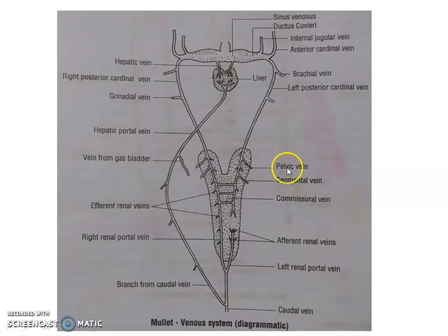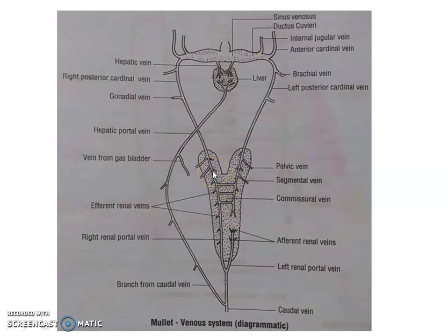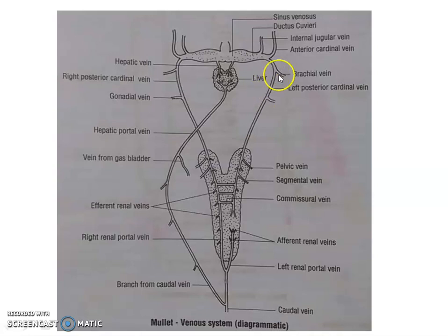The posterior cardinal vein also receives blood from the pelvic fin region through the pelvic vein, from the gonads through the gonadal vein, and from the pectoral fin region through the branchial vein. So the posterior cardinal vein is formed by the fusion of efferent renal veins and, moving anteriorly toward the sinus venosus, receives blood from the body wall, pelvic fin, gonads, and pectoral fin region.